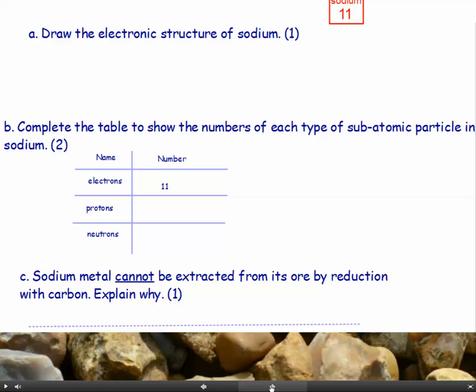Part B: complete the table to show the numbers of each type of subatomic particle in sodium. Part C: sodium metal cannot be extracted from its ore by reduction with carbon. Explain why.